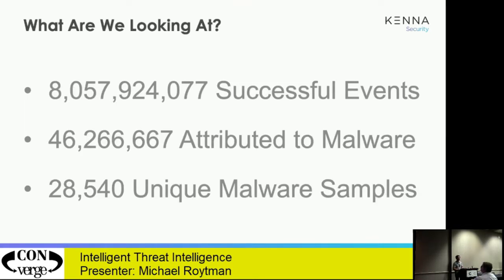Over the past five years we've seen 8 billion successful alerts through our data collection at Kenna. We get it from Proofpoint, Reversing Labs, a backdoor into the AlienVault product, SANS Internet Storm Center, and most recently Recorded Future. All of those represent an alert that successfully compromised a vulnerability. 46 million of those are attributed to malware, constituting 28,000 unique malware samples. Think about that: you'd need 28,000 different signatures in Carbon Black or Cylance to block all those — or you can remediate 299 vulnerabilities. That's only possible if threat intelligence is feeding your vulnerability management program and not living in the silo of detect and respond.